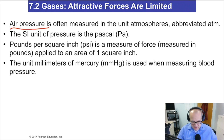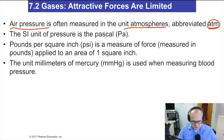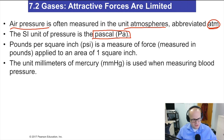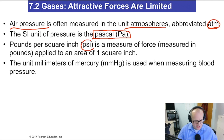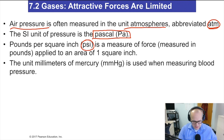Air pressure is often measured in atmospheres, abbreviated atm — that's almost exclusively what I use. The SI unit for pressure is the pascal, though I rarely use that in the U.S. Another unit you probably see on your tires is psi, which stands for pounds per square inch.